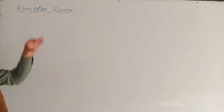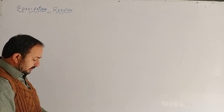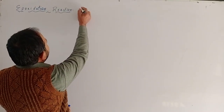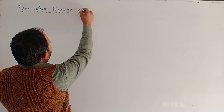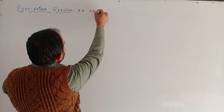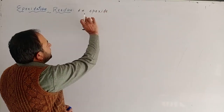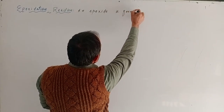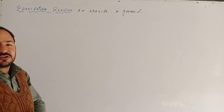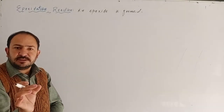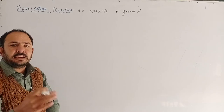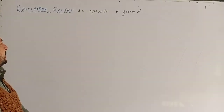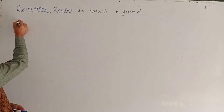Epoxidation reaction kya hain — we can define it this way: the chemical reaction in which an epoxide is formed is called Epoxidation Reaction. The reaction in which an epoxide is formed is Epoxidation Reaction.